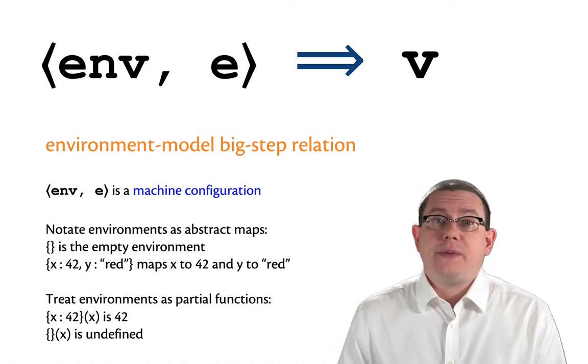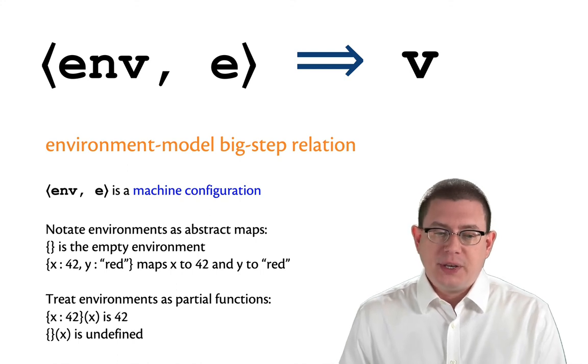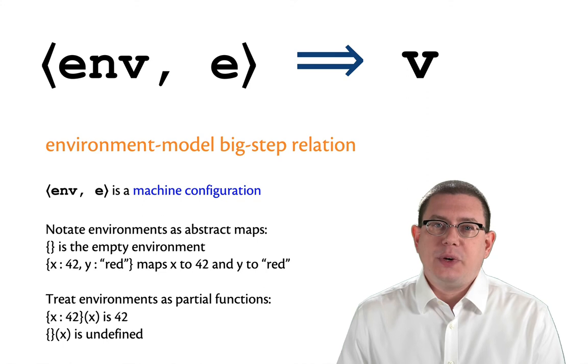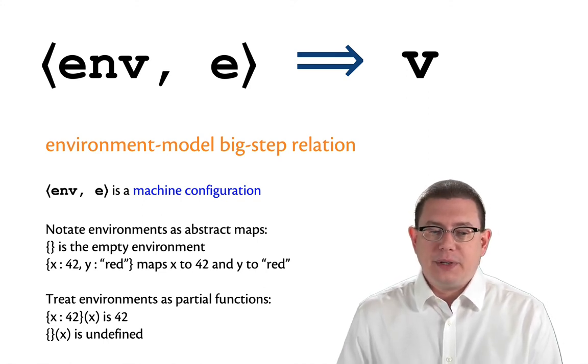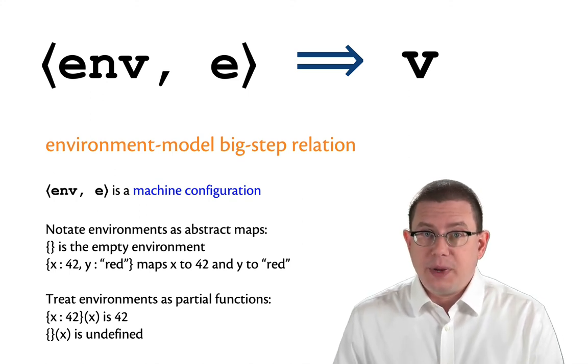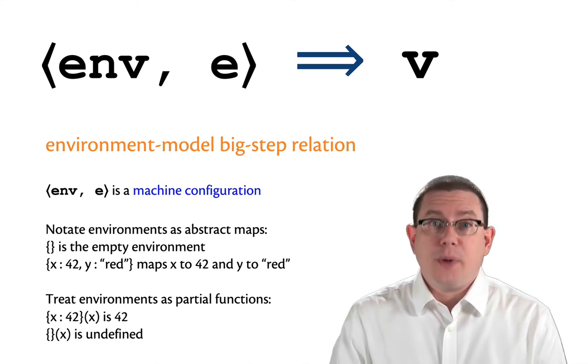And I'm going to treat environments here as partial functions. If I have an environment, I'll just write parentheses x next to it to mean look up that variable x inside of the environment. Of course, if you go to look up a variable that isn't bound in the environment, that's unbound. So that's why it's a partial function.